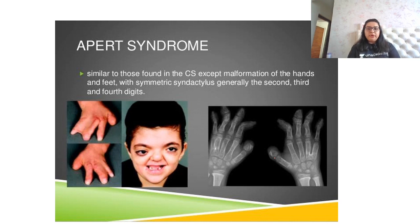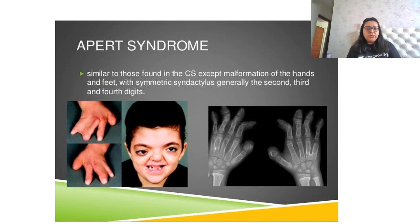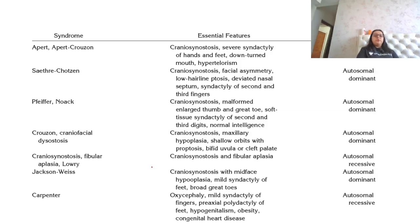You can see in the images the malformations of the hand — webbing of the fingers — with symmetric syndactyly of both hands, particularly involving the third and fourth digits. On facial appearance, these children look similar to Crouzon syndrome patients, with proptosis also present. Malformed ears and craniosynostosis are also quite obvious.